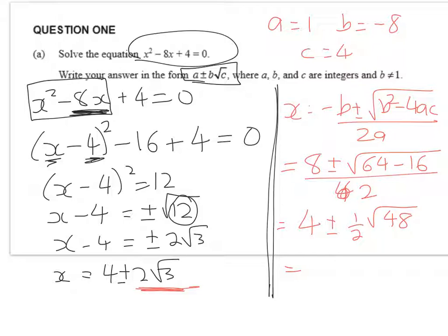Which is equal to 4 plus or minus 1 half root 48. Now 48 is equal to 3 times 16. So that's 4 plus or minus 4 over 2 root 3, which of course is what we got when we did it the other way. So there we go, that's the first question done.